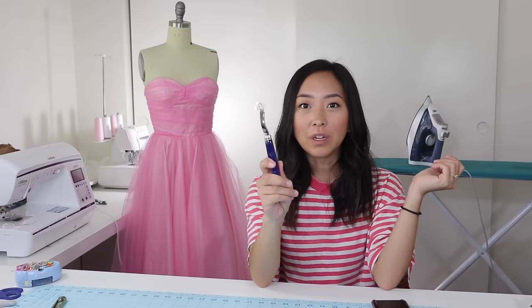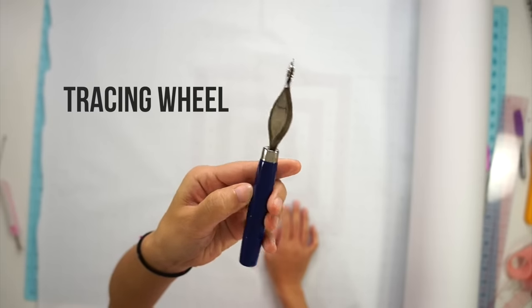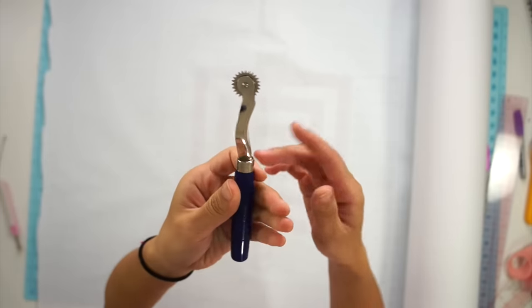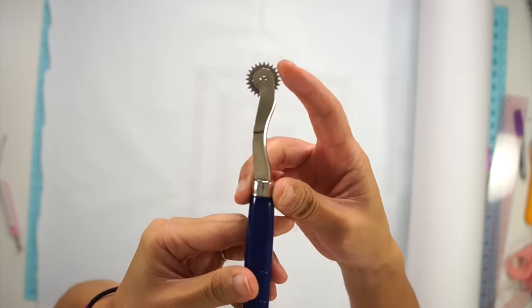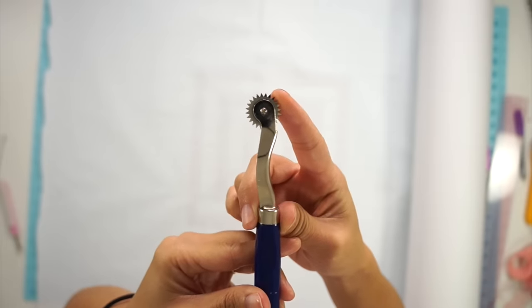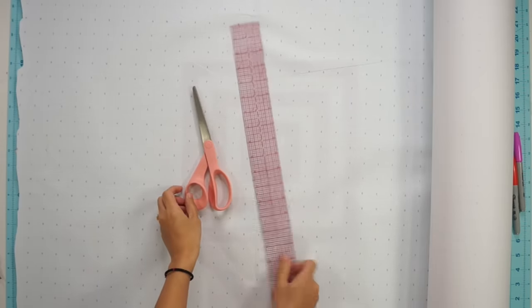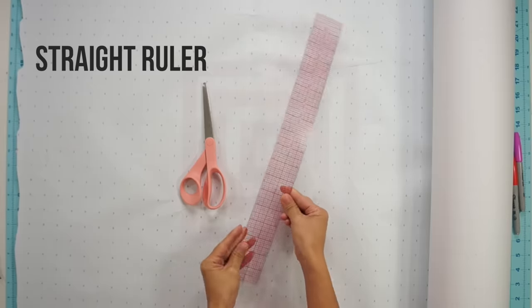You'll need a tracing wheel. Any tracing wheel is fine, you don't have to get my exact one, but they have spikes along the wheel which will create tiny dents into the paper while you're tracing it, which will make it easy for you to see and mark afterwards. You'll need some paper cutting scissors and rulers.